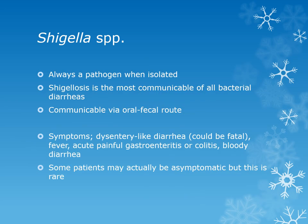Shigella is always a pathogen whenever isolated. It causes severe dysentery resulting in intestinal mucosal epithelial cell destruction. It is the most communicable of all bacterial diseases, requiring very few organisms to make a person sick. It is communicable via the fecal-oral route, and flies can transmit it as well. Symptoms include dysentery-like diarrhea, which can be fatal, fever, acute painful gastroenteritis, colitis, and bloody diarrhea. Most patients are symptomatic. Shigella is usually treated with antibiotics, and the best prevention is hand washing.